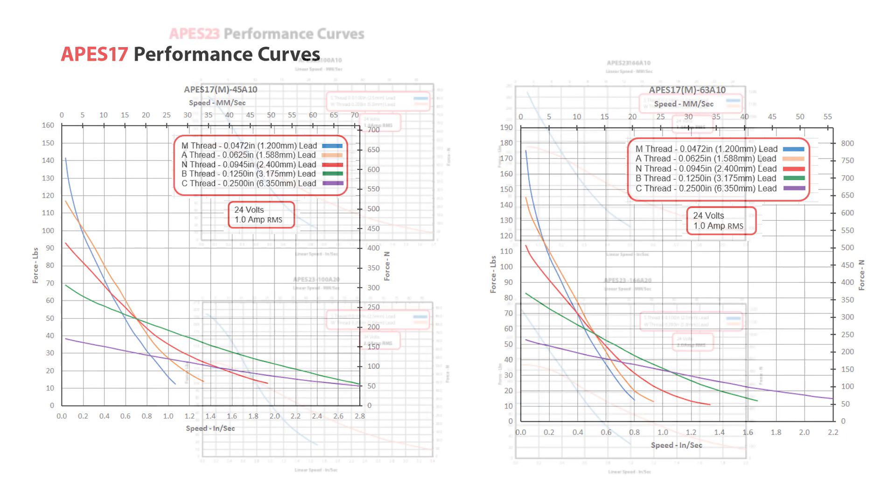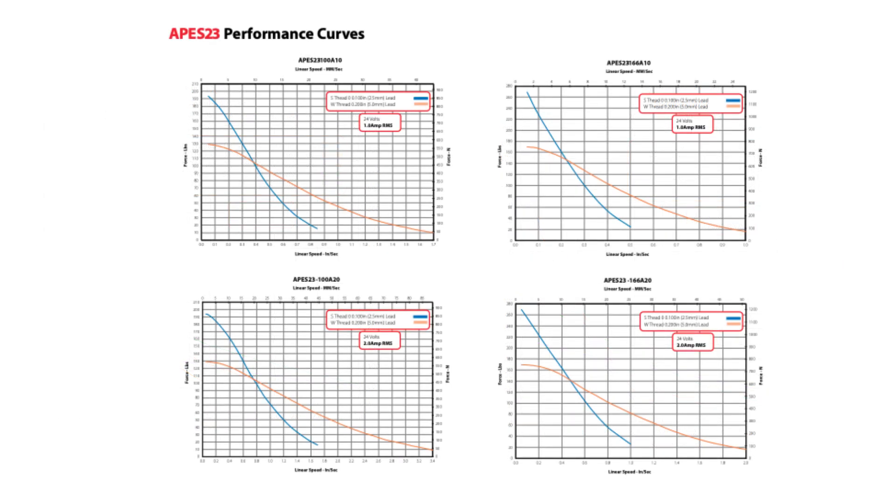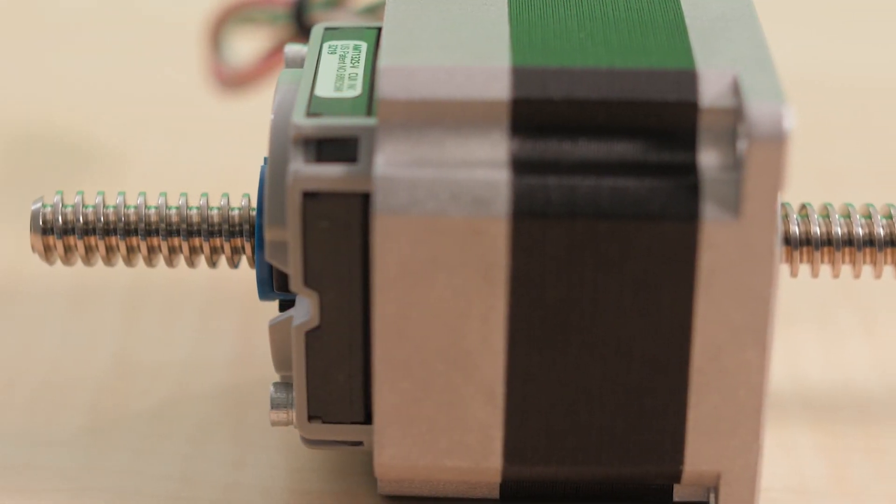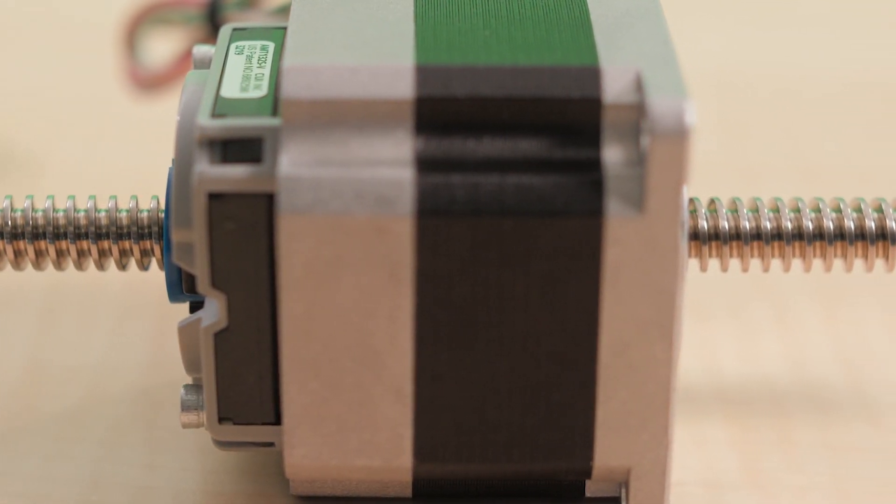These hybrid stepper-based linear actuators can provide OEMs the precision, performance, and reliability needed for a wide variety of motion control positioning applications. These can range from medical and laboratory equipment to industrial machinery and beyond.